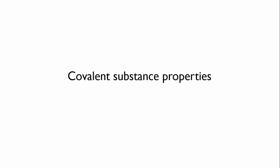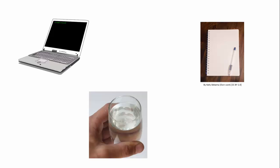You can get a feel for this by looking around you right now. Most things in your world are made of covalently bonded substances. The computer or phone you're watching this on has a lot of plastic parts. Plastics are covalent substances. The ink in your pen and the paper of your notepad are covalent substances. Maybe you have a glass of water nearby. Glass is a covalent substance and so is water.